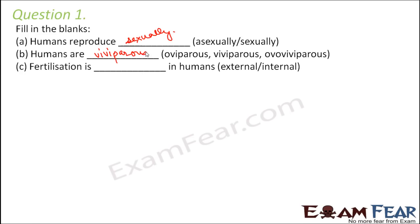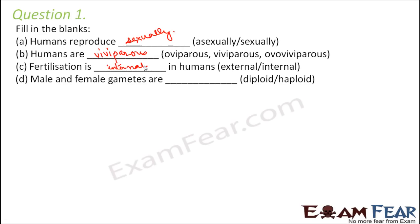Fertilization is — external or internal — in human beings? Of course it is internal, because the fusion between the sperm and the egg takes place inside the female's body, specifically inside the fallopian tube. Male and female gametes are haploid or diploid? They are haploid.